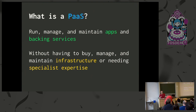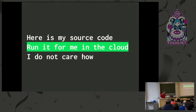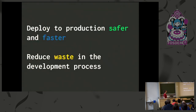We have this haiku in the Cloud Foundry community: "here's my source code, run it for me in the cloud, I do not care how." That's the experience we want our users to have — they give us some code, it just works. If it's broken, it's because the code's broken, not because the platform's broken. We want our users to be able to deploy to production safer and faster, without going through waste in their development process.